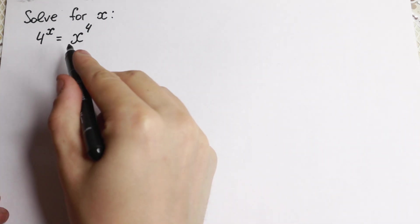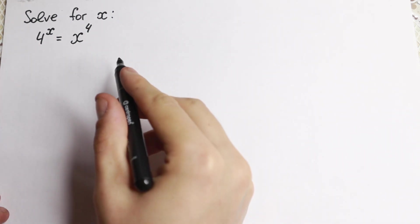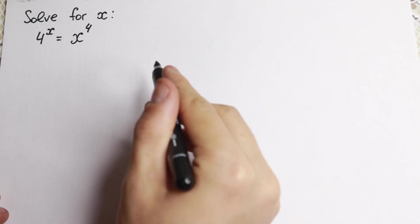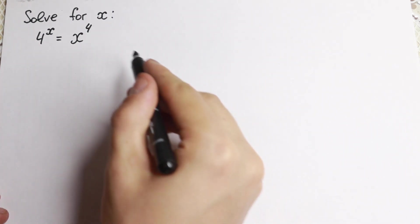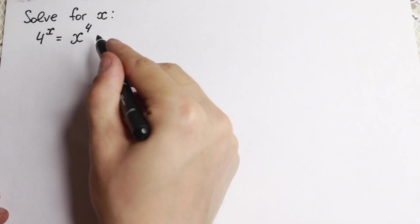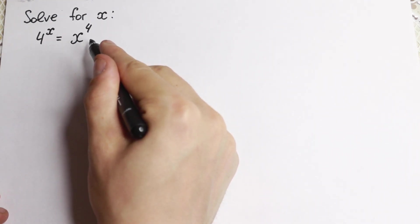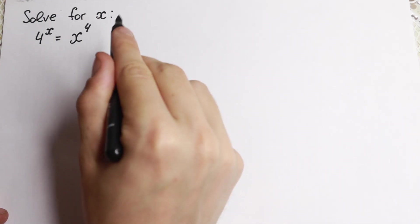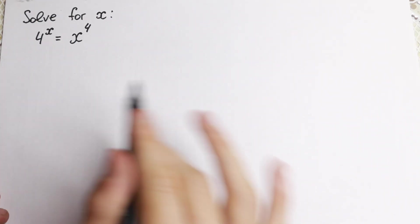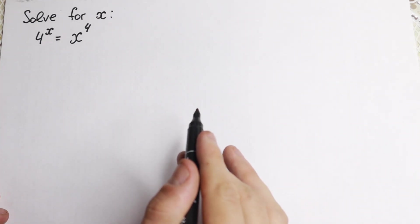We have 4 to the x equal to x to the fourth power, and we need to find our x. As you can see, we have a fourth power, so we'll have no more than four roots — so a lot of roots right here.